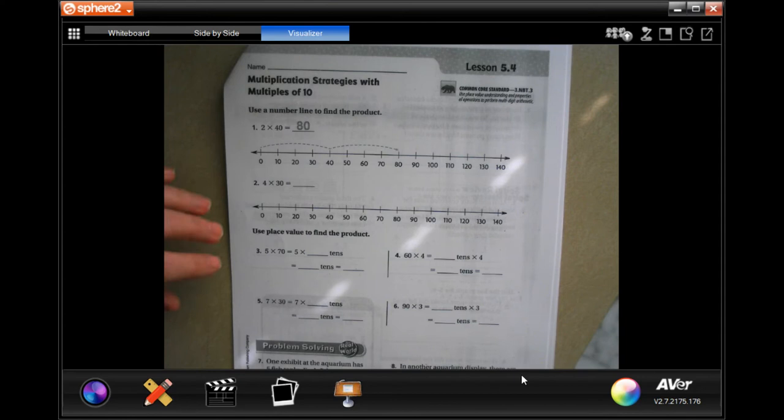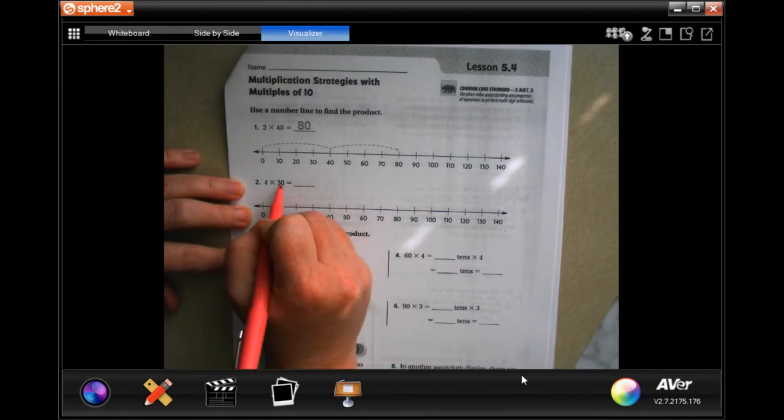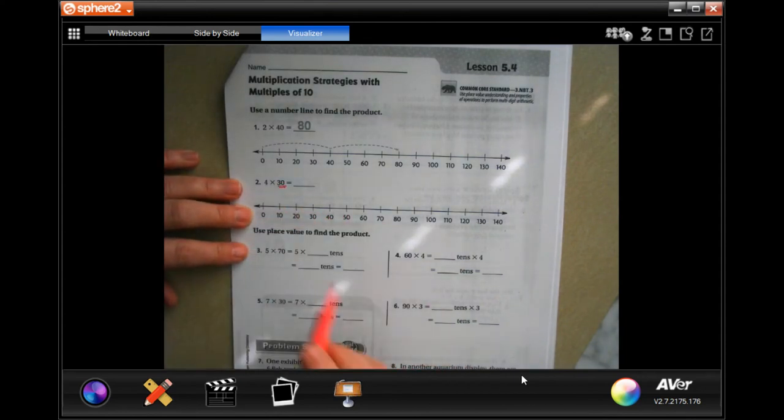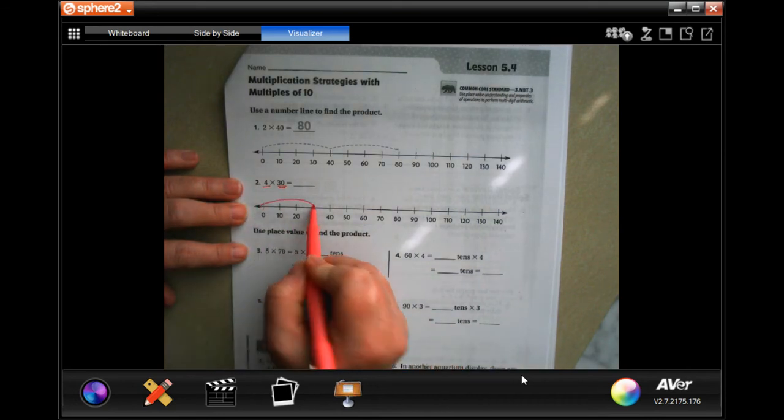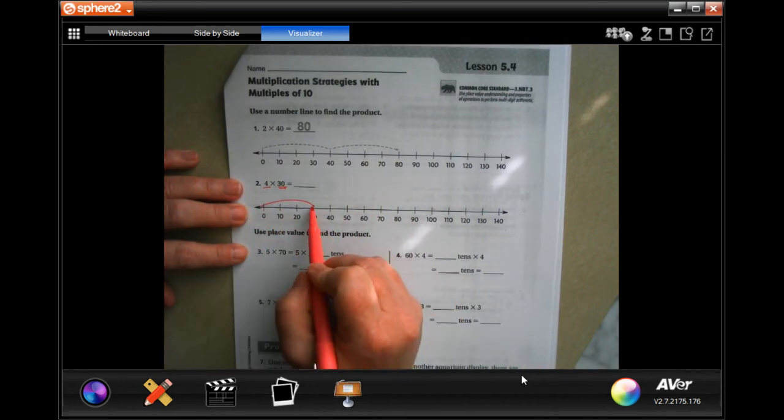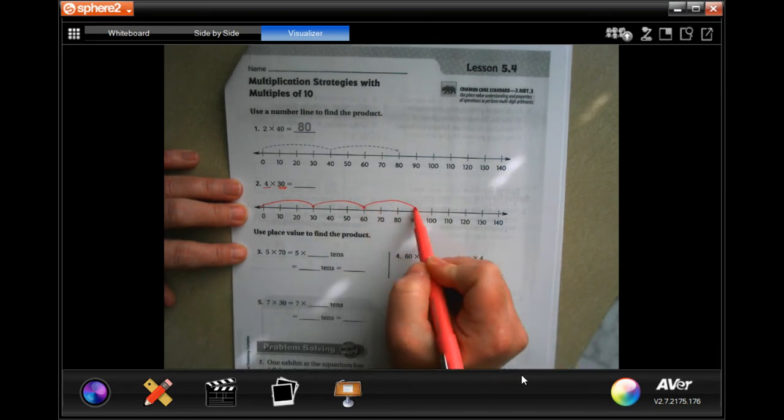We're going to go ahead and get started with number 2. So all we're doing is hopping by 30 four times. We're going to go from 0 to 30, then we're going to go to 60, then we're going to go to 90.